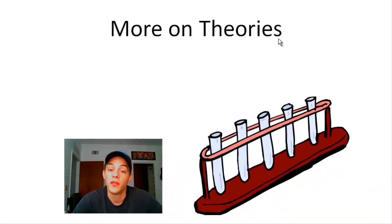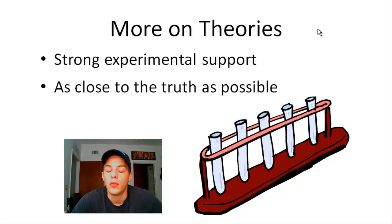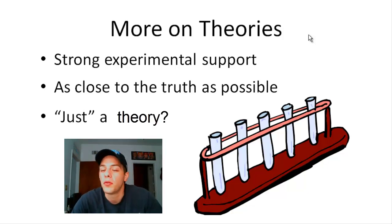So theories, scientific theories have strong experimental support. And the truth of the matter is that we can't do any better than a theory in science. Theories are as close to the truth as possible. The only thing better than a theory is a better theory. So when someone throws around the term 'just a theory' like it's easily dismissible, a statement like that really reveals a very profound misunderstanding of how scientific theory works. I mean, the idea that matter is composed of atoms is itself just a theory, but it has hundreds of years of scientific evidence to support it. So whenever someone says just a theory, reach over and smack them in the face and tell them to watch this video.